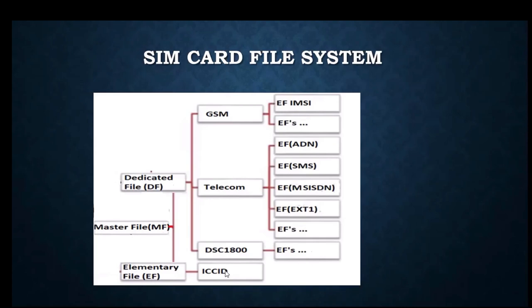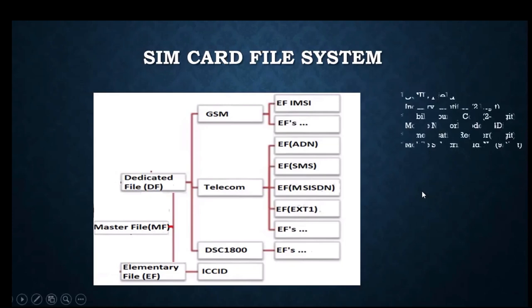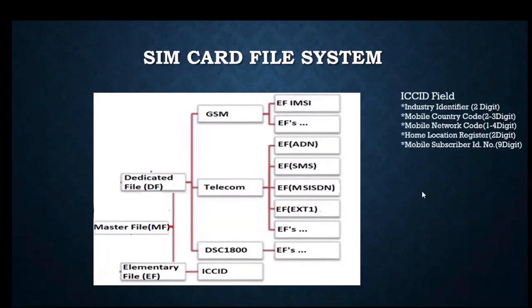As part of the Elementary File, we have ICCID — Integrated Circuit Card Identifier — which is a 20-digit number. It consists of the Industry Identifier (2 digits), Mobile Country Code (2–3 digits), Mobile Network Code (1–4 digits), Home Location Register (2 digits), and Mobile Subscriber ID Number (9 digits).